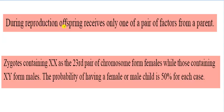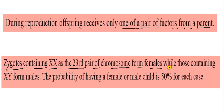During reproduction, offspring receives only one of a pair of factors from a parent. Parents have two factors and one factor is received by the offspring. Zygotes containing XX represent the 23rd pair of chromosomes from female, while those containing XY are from males. The probability of having a female or male child is 50% for each case.